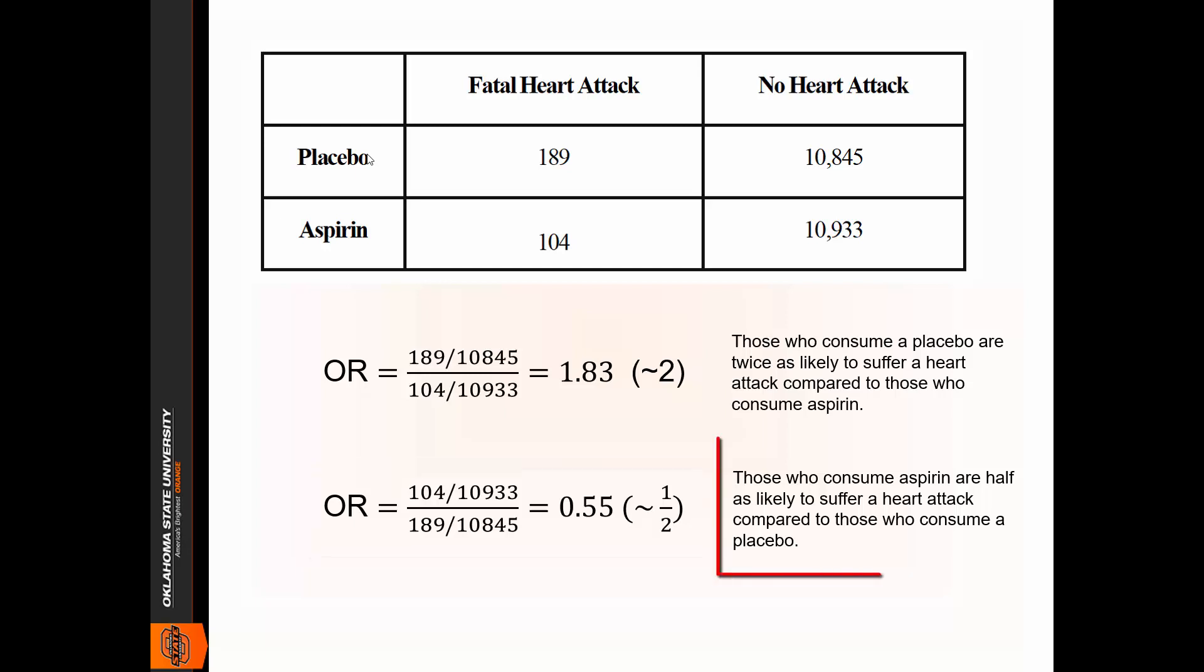So again, we start with the numerator, and we see that those who consume the aspirin were half as likely to suffer a fatal heart attack compared to those who consume the placebo. So notice, as long as you follow the steps here, you're going to set up your odds ratio and interpret it correctly.